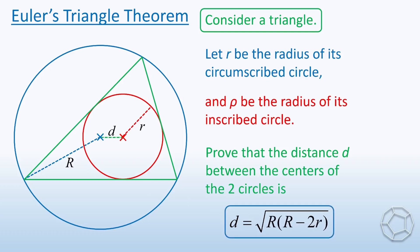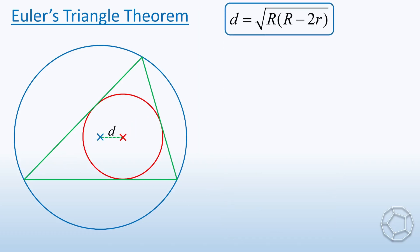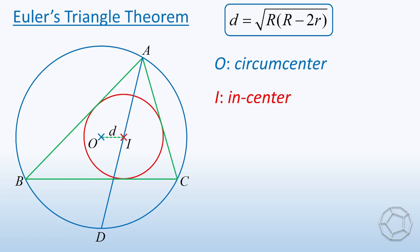Alright, let's give some names to the points. We call the triangle ABC. Let O be the circumcenter and I be the incenter. Then we construct AI and extend it to the circle at D. Next, we extend OI on both sides to meet the circle at G and H.